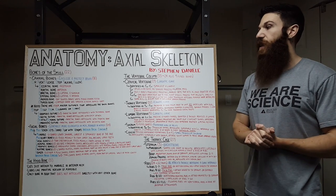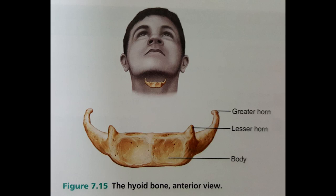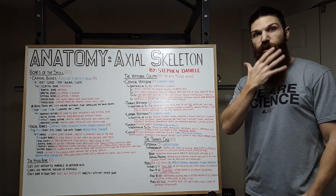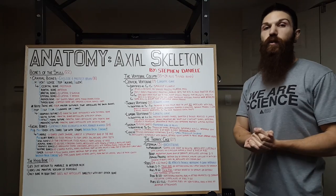Now that we've taken a look at the bones of the skull, let's take a look at the hyoid bone. The hyoid bone doesn't quite fit into the bones of the skull. We only have one hyoid bone. It lies just inferior to the mandible in the anterior neck and it looks like a miniature version of the mandible. Also of note, the hyoid bone is the only bone in the body that does not articulate directly with any other bone.